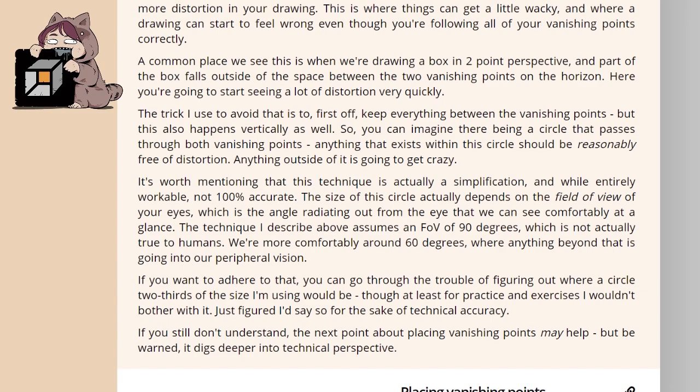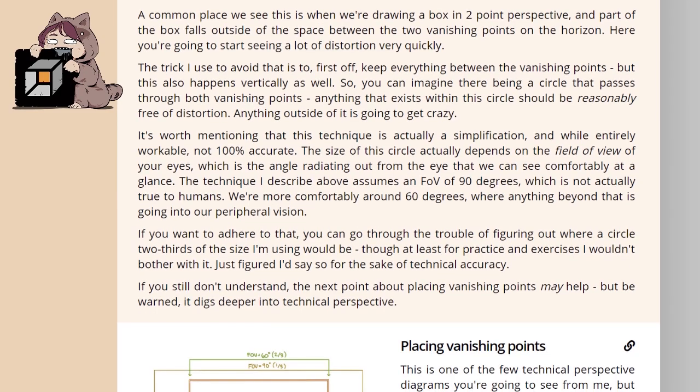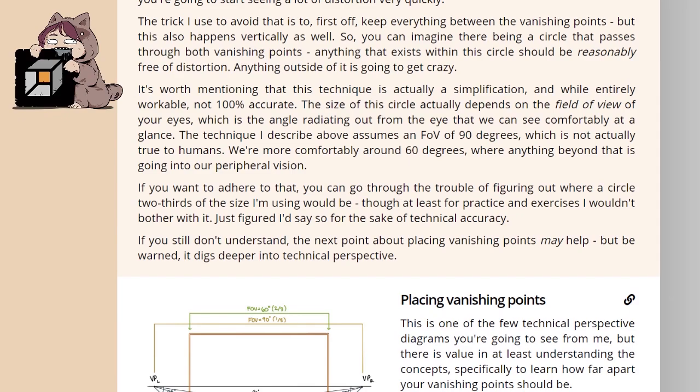It's worth mentioning that this technique is actually a simplification, and while entirely workable, not 100% accurate. The size of this circle actually depends on the field of view of your eyes, which is the angle radiating out from the eye that we can see comfortably at a glance. The technique I described above assumes that an FOV of 90 degrees, which is not actually true to humans. We're more comfortable around 60 degrees, where anything beyond that is going into our peripheral vision. If you want to adhere to that, you can go through the trouble of figuring out where a circle two thirds of the size I'm using would be. Though at least for practice and exercises, I wouldn't bother with it. I just figured I'd say so for the sake of technical accuracy. If you still don't understand the next point about placing vanishing points may help, but be warned, it digs deeper into technical perspective.